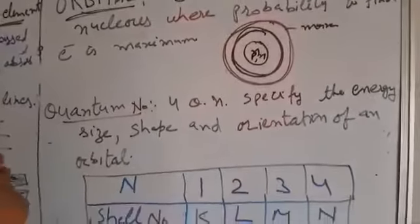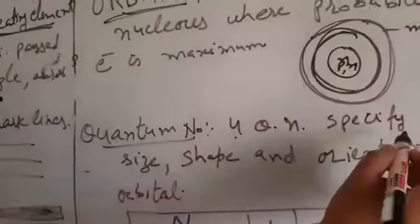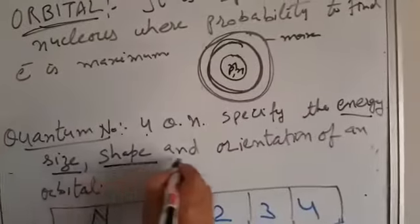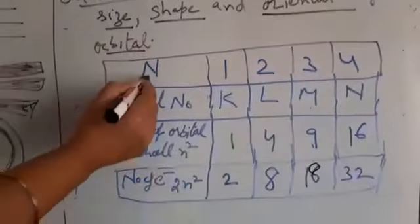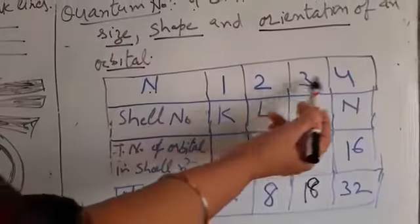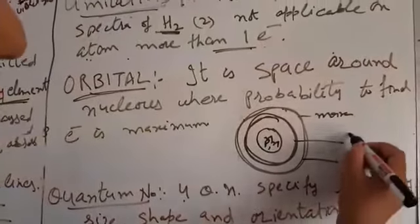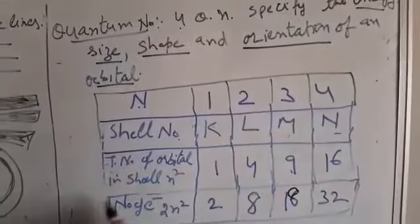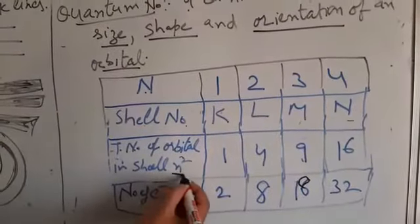Next are the quantum numbers. Generally, 4 quantum numbers are present which specify the energy, size, shape and orientation of an orbital. What are these? First one is N. Any number 1, 2, 3, 4. Then there are the shell numbers. Shell numbers means around the nucleus. Like this is the first shell, second shell: K, L, M, N. These are the number of shells. Now total number of orbitals in shell, that formula is N square.